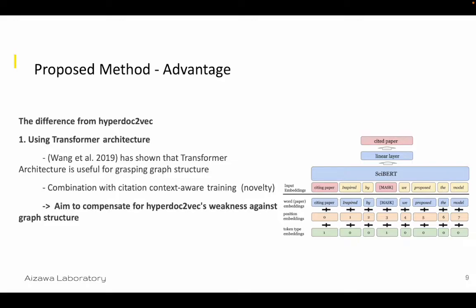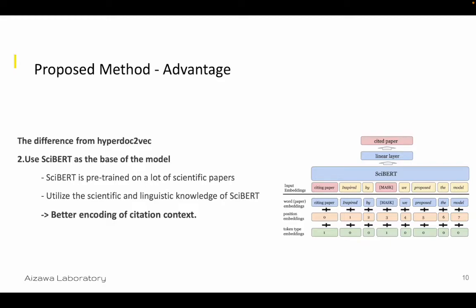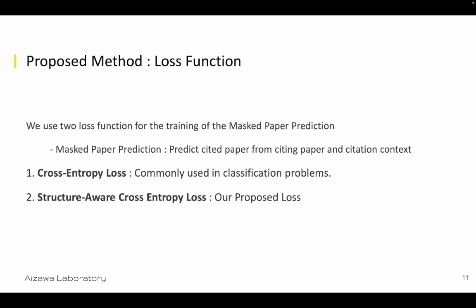There are two main differences between our method and existing methods. First, we utilize transformer architecture. In existing studies, it has been shown that transformer architecture is useful for grasping graph structure. So by combining transformer with citation context-aware training, we aim to compensate for HyperDoc2Vec's weakness against graph structure. Second, we use SciBERT as the base of the model. SciBERT is pre-trained on a lot of scientific papers, so we can utilize scientific knowledge and linguistic knowledge to encode the citation context better.